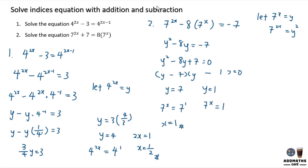For the second solution: 7^x = 1. What gives you 1? We know that 7^0 = 1, so x = 0.